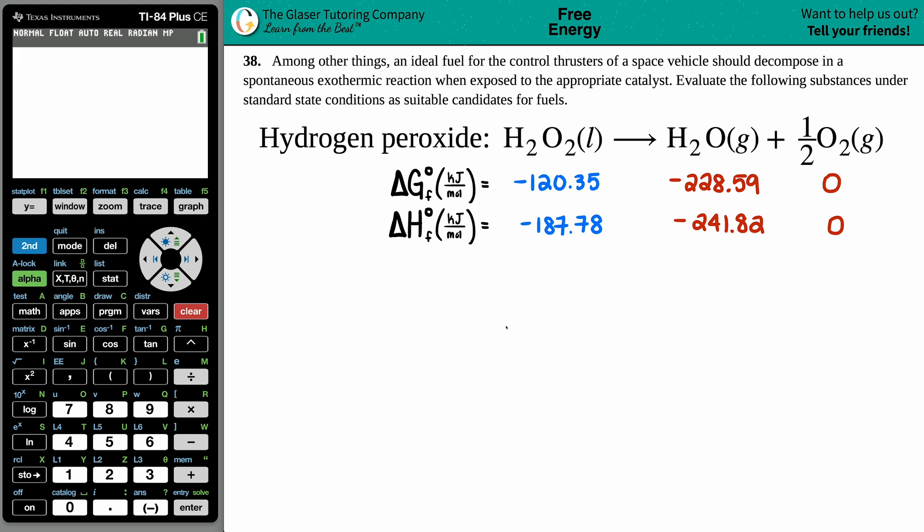Number 38. Among other things, an ideal fuel for the control thrusters of a space vehicle should decompose in a spontaneous exothermic reaction when exposed to the appropriate catalyst. Evaluate the following substances under standard state conditions as suitable candidates for fuels. Okay, so in this case we have hydrogen peroxide, right, what we put on our cuts to clean it out when we accidentally scrape our knee or something.